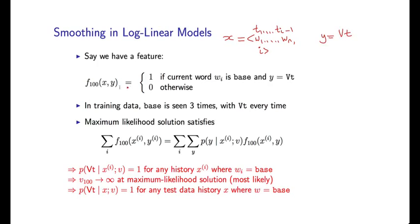Let's say we have a feature definition where our hundredth feature is 1 if the word we're tagging is 'base' and the tag we're choosing is VT. Now, assume that in our training data we see the word 'base' three times, and we see it with the tag VT every single time. That's not an unrealistic situation — in many cases we will see words with the same tag every time.